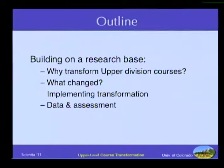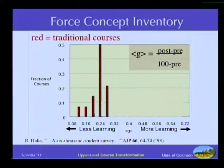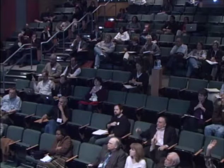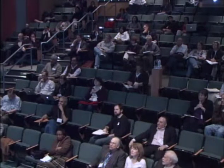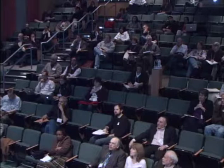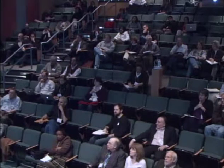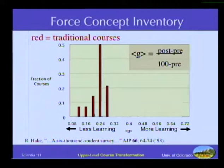I want to talk a little bit about what's changing and how we implement transformation, and I've got to show you data because I'm a physicist. Let me start with a plot. I'd like to ask: how many have seen Richard Hake's plot? Just a small handful. This is a paper which was sociologically very influential — many physicists have seen this plot, and it has changed their opinions about introductory physics.